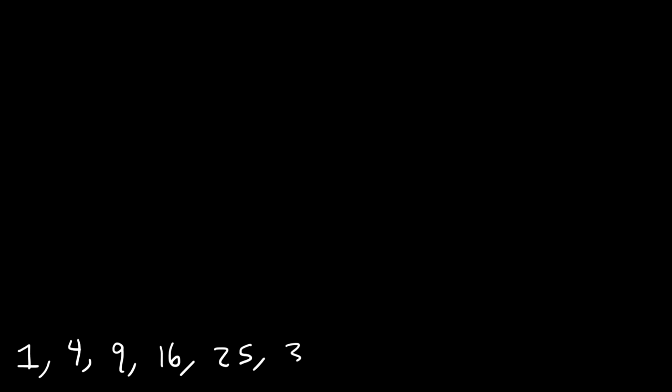You need to be familiar with the perfect squares: 1 squared is 1, 2 squared is 4, 3 squared is 9, 4 squared is 16, 5 squared is 25, and then 36, 49, 64, 81, and 100. I'm only going to go up to 10 in this video, but you may want to know it up to 20 — 20 squared is 400.